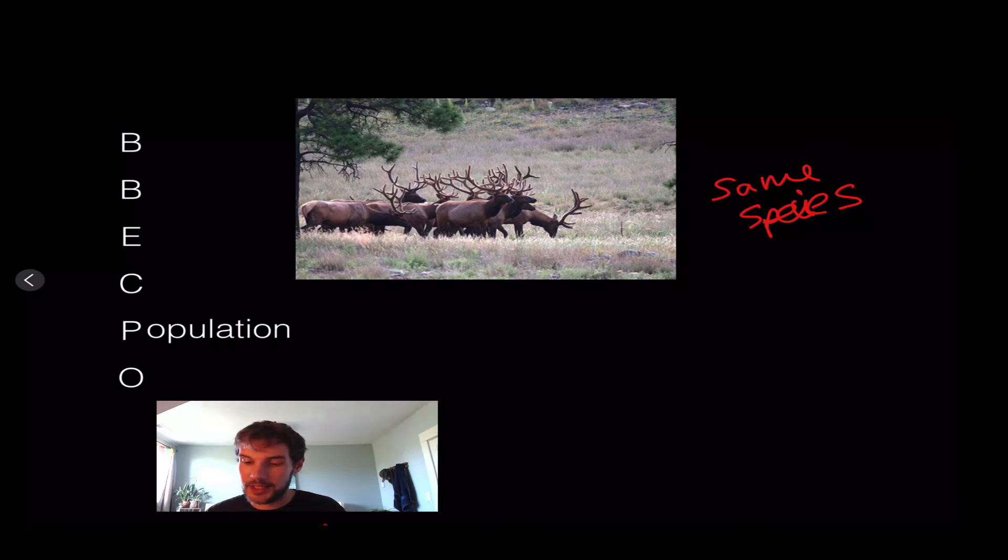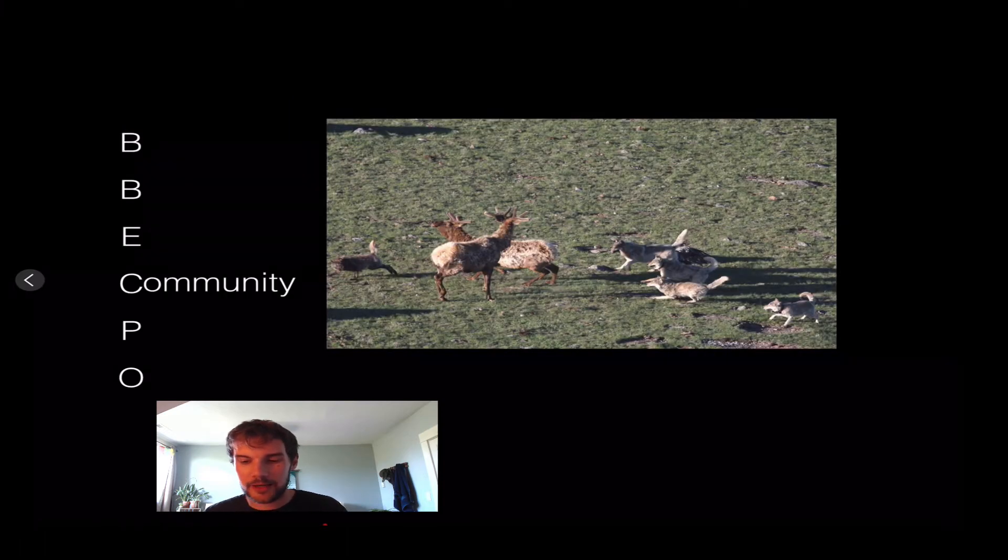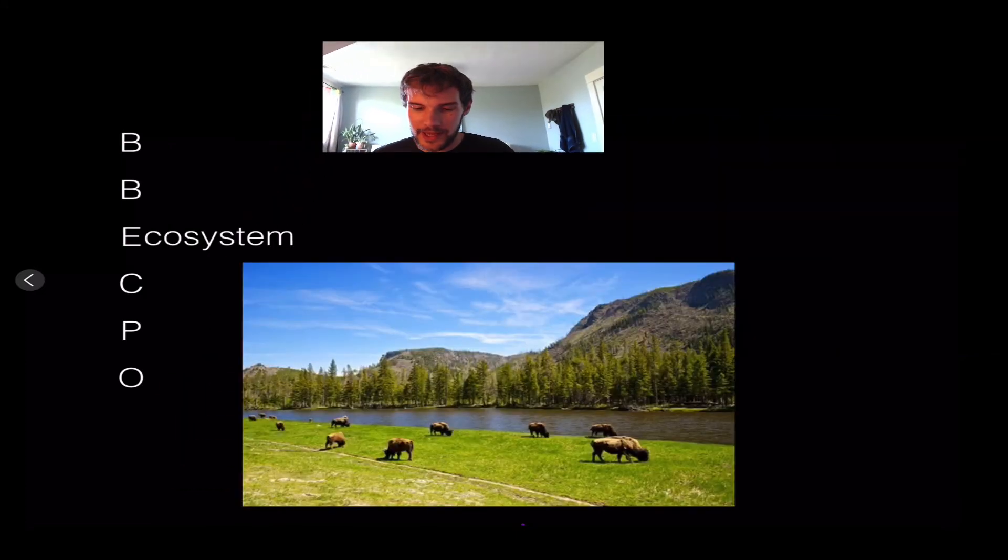A community includes multiple different species that usually interact with each other, like elk and wolves in a predator-prey relationship. As the wolf population goes up, the prey population usually goes down, as has been seen with elk in Yellowstone.